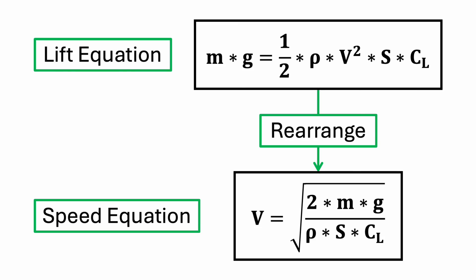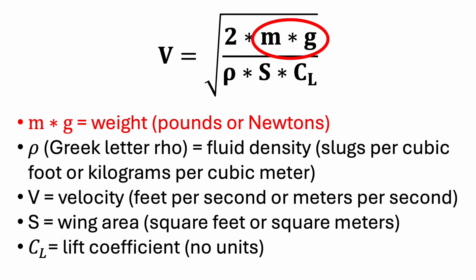One of the best ways to demonstrate the lift equation is to change each of the variables and observe changes in the airplane's speed. We can rearrange the lift equation to make an equation for the plane's speed. The first variable we'll look at is the weight of the plane.